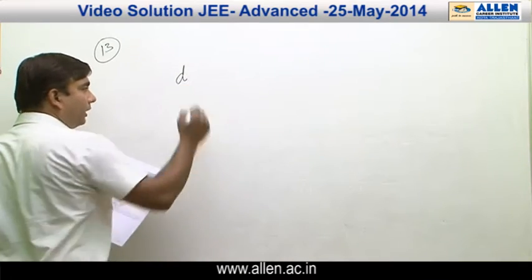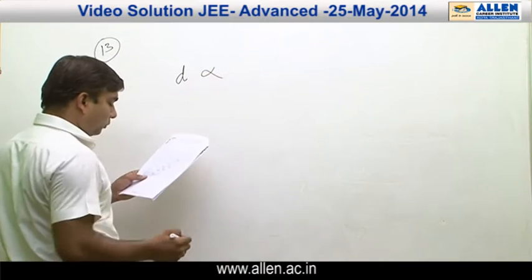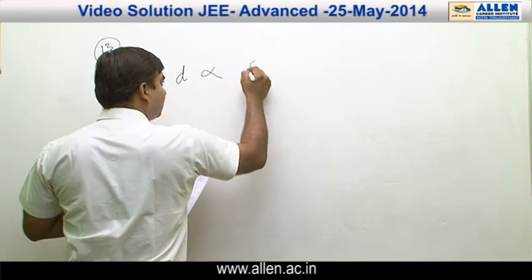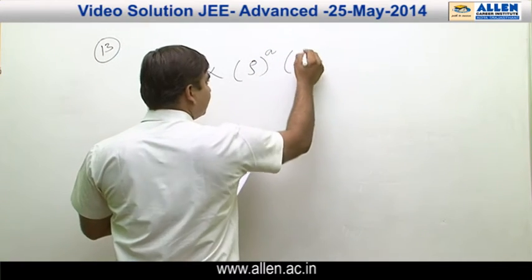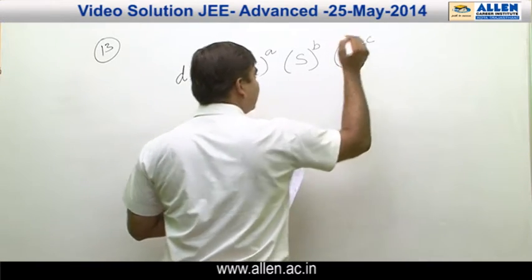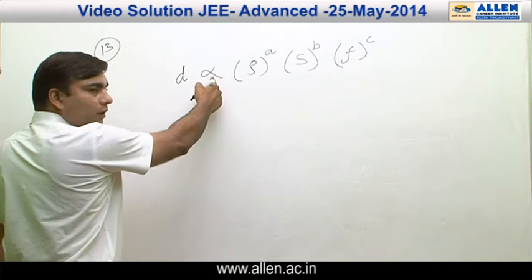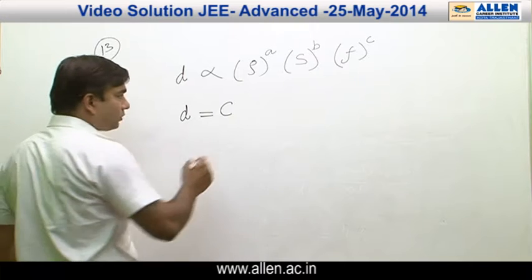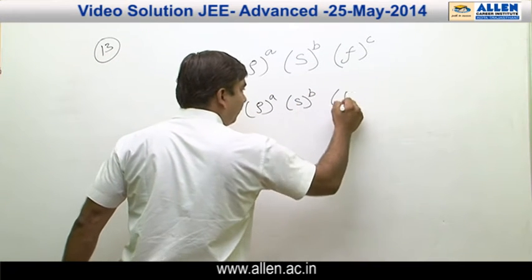So let us see — if the distance is denoted by d, I am assuming that the relationship is: distance d is proportional to mass density rho to the power a, then intensity denoted by s to the power b, and then the third term is frequency f to the power c.